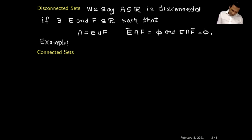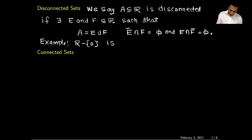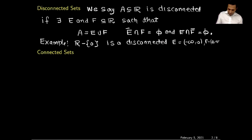As an example, consider the set of all reals with zero deleted. This is a disconnected set. We can choose E as negative infinity to zero and F as zero to positive infinity, and you can check that the closure of E does not intersect F, and E does not intersect the closure of F.